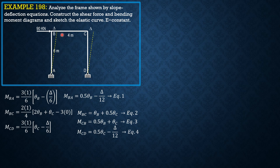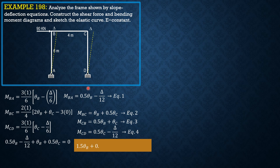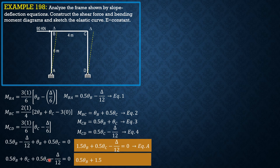We apply equilibrium at joint B: MBA plus MBC equals 0, giving (0.5 theta_B minus delta over 12) plus (theta_B plus 0.5 theta_C) equals 0. Combining like terms establishes equation A: 1.5 theta_B plus 0.5 theta_C minus delta over 12 equals 0. At joint C: MCB plus MCD equals 0, giving equation B: 0.5 theta_B plus 1.5 theta_C minus delta over 12 equals 0.